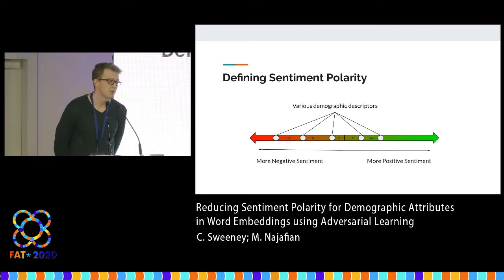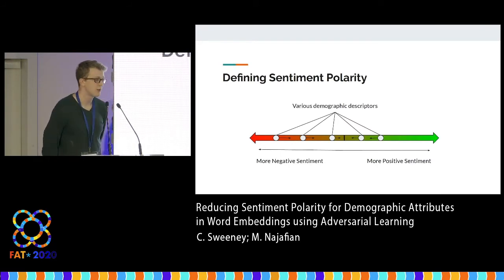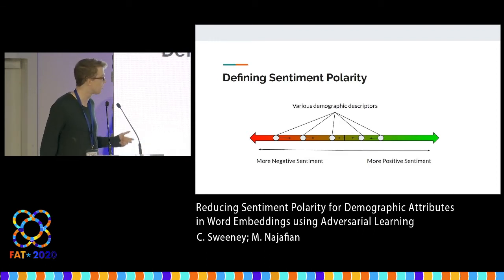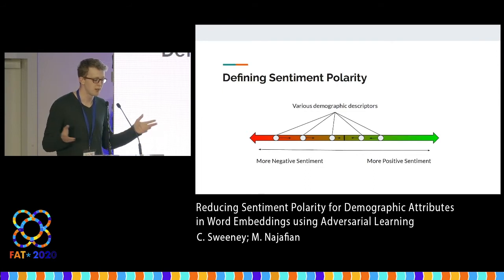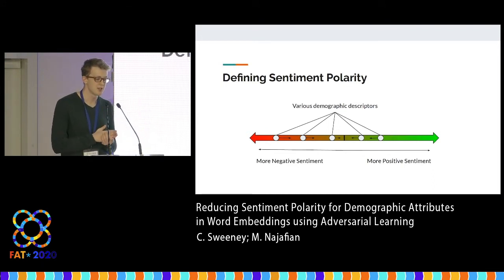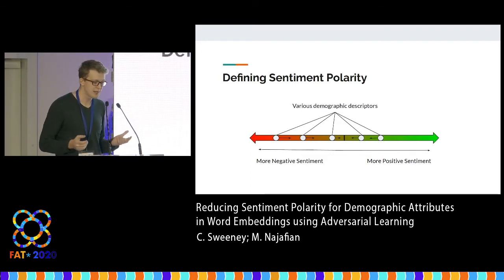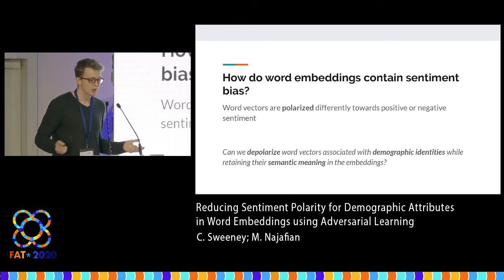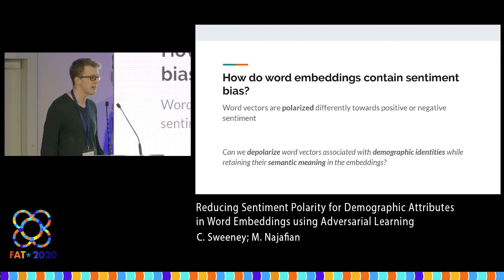The bias comes where various demographic descriptors within a certain group — such as national origin descriptors — end up differently on the sentiment polarity axis. The goal is to take all these demographic word vectors and have no projection onto sentiment polarity. This is very difficult to do without distorting the vector space, so the real question becomes: can we depolarize word vectors associated with demographic identities while still retaining their semantic meaning within the embedding space?